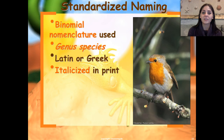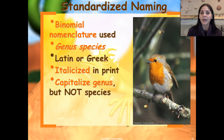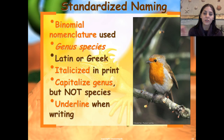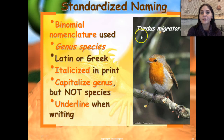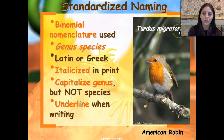Binomial nomenclature uses the genus and the species. It's either Latin or Greek. If you print it out or type it, you always want to type it in italics, and you always capitalize the genus and leave the species in lowercase form. If you're handwriting it, you need to make sure that you underline both the genus and the species. For example, Turdus migratorius is a bird — it's a robin. Turdus is going to be its genus name and as you can see it's capitalized. Migratorius is going to be its species name, and it is not capitalized. You can also see that it's in italics.